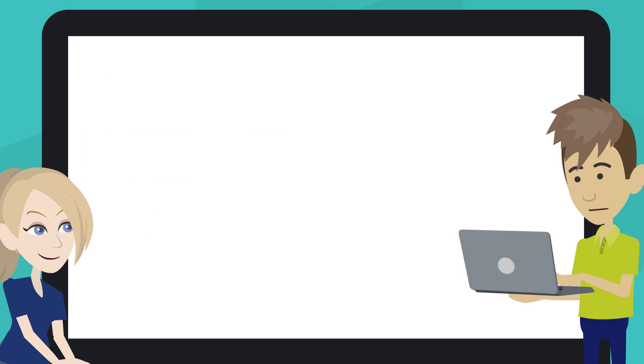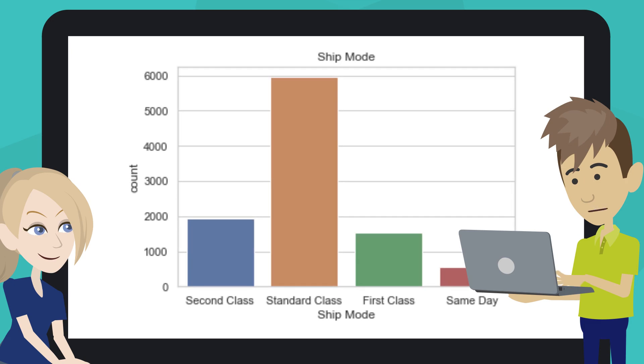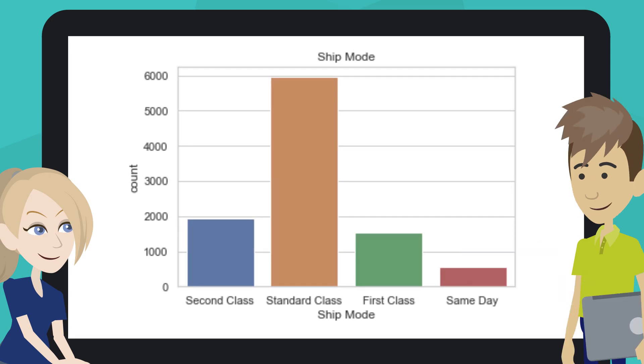Got it! Click on the Play button or hit Shift+Enter. We can see the bar plot for Shipment Mode now.